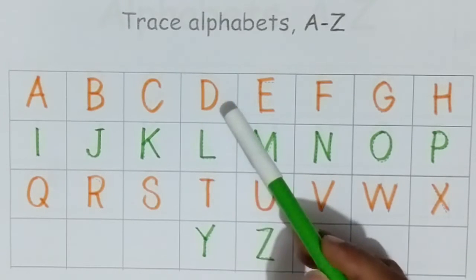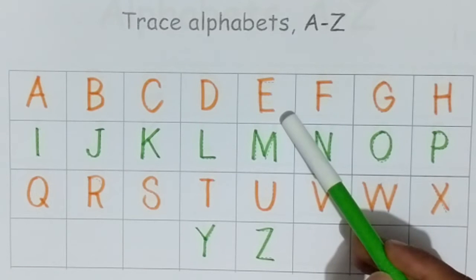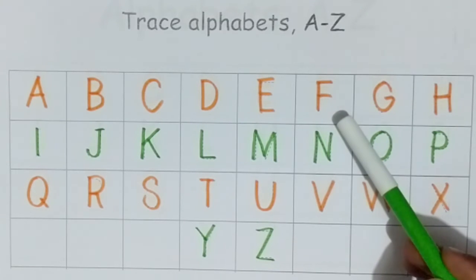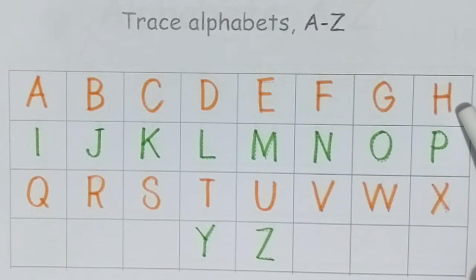D, D for dog. E, E for elephant. F, F for fish. G, G for grass. H, H for hand.